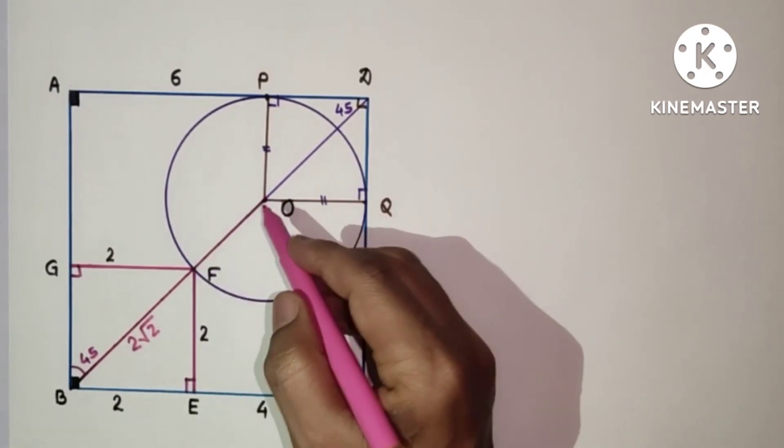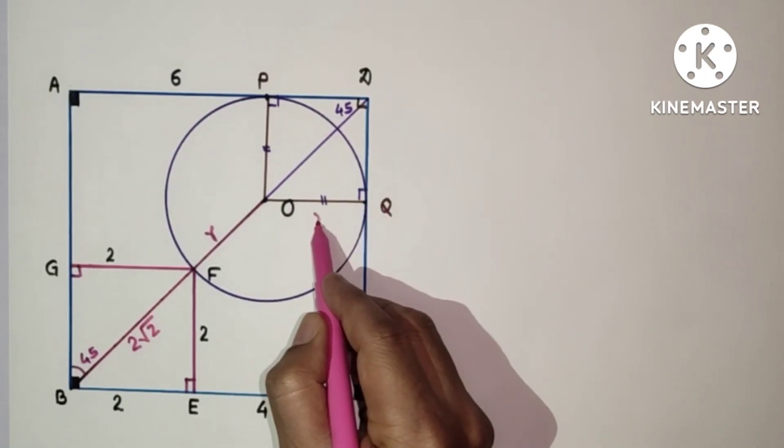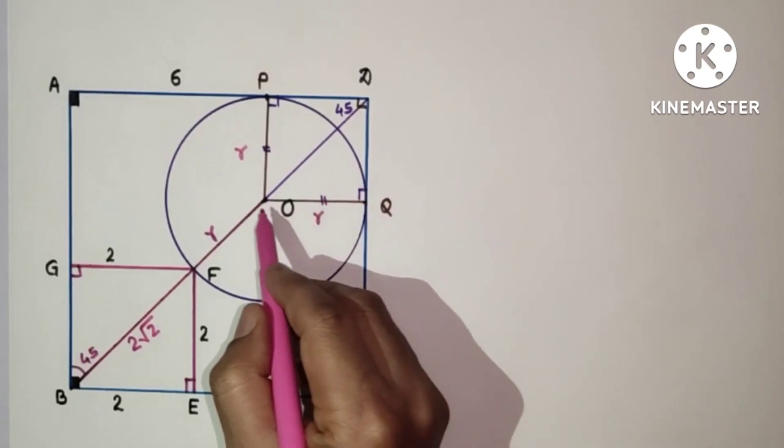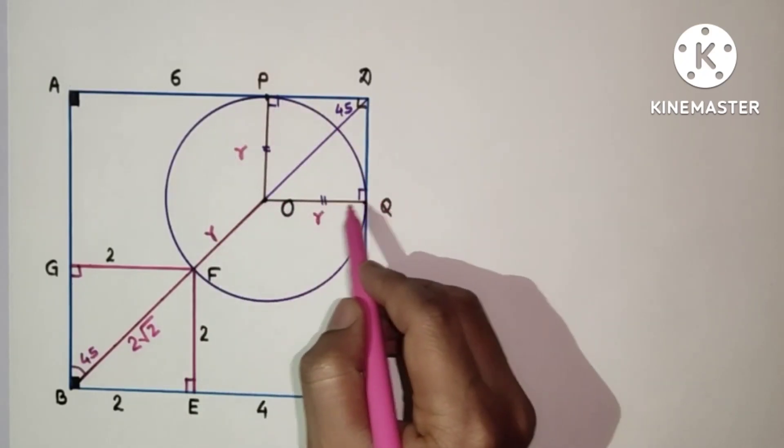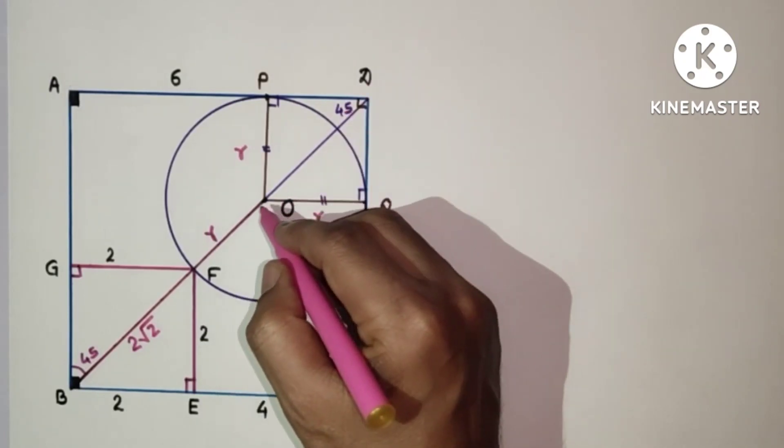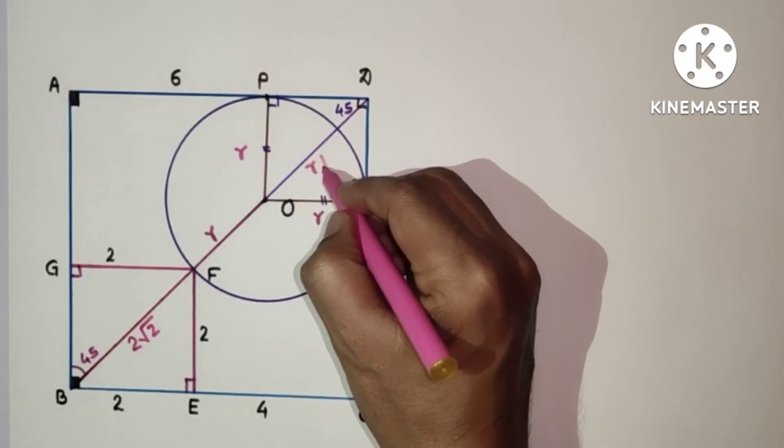This FO is radius which is to be found. This OQ is radius. This OP is radius. This is a square. So this is radius, this is radius. So OD will be radius side root 2. The diagonal will be side root 2. So this OD will be R root 2.